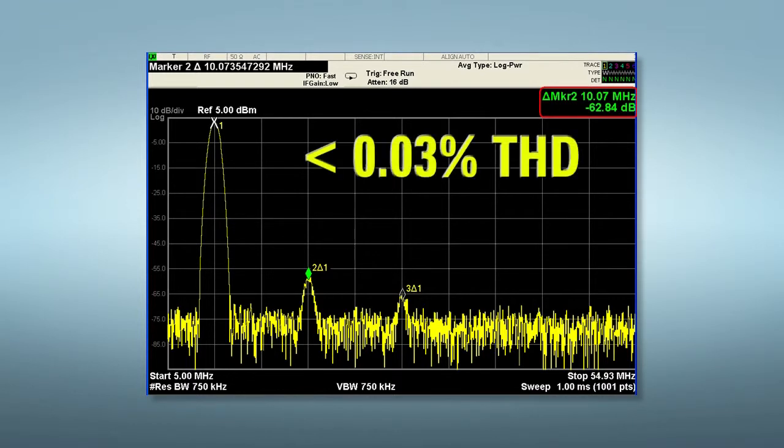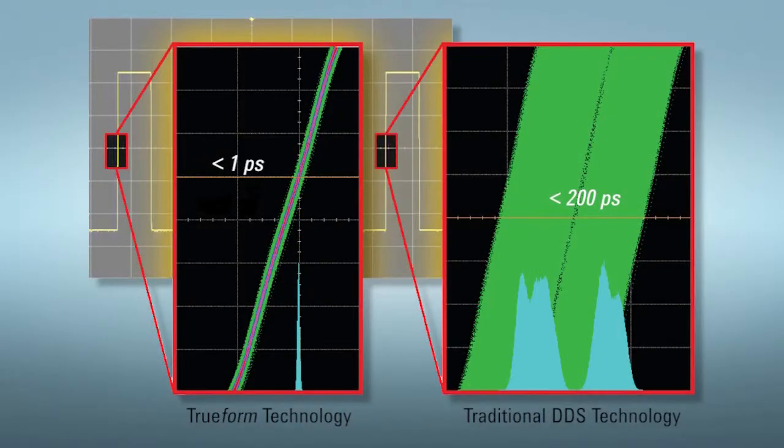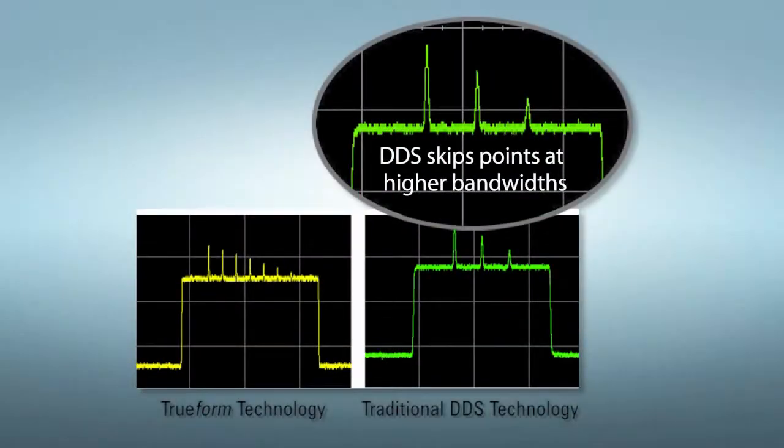As a result, you get the highest signal fidelity of any waveform generators in their class, with less than 0.03% total harmonic distortion, an astounding one picosecond of jitter, and no drop points at higher frequencies when generating arbitrary waveforms, as can be the case with direct digital synthesis or DDS-based generators.